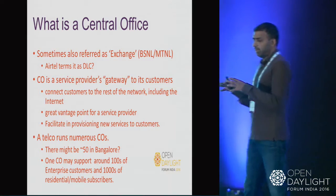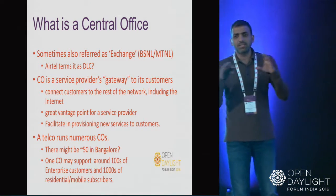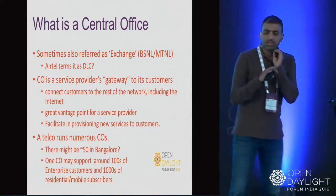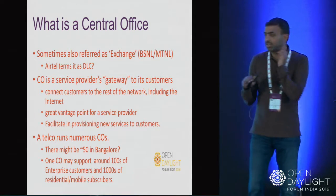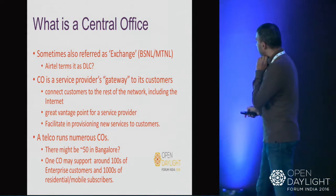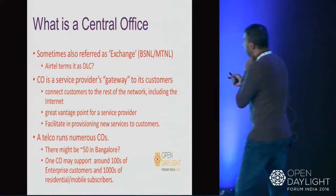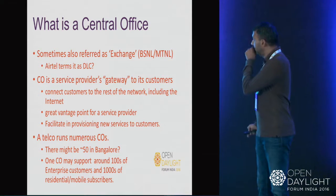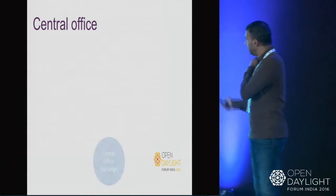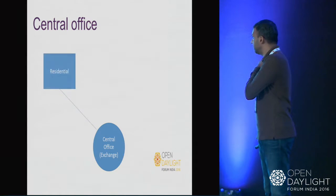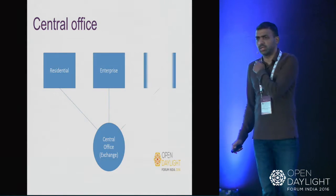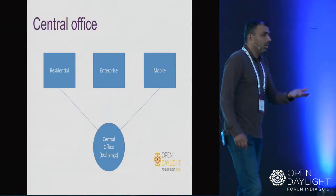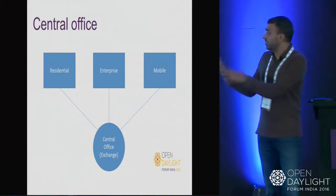Central offices serve residential customers, enterprise customers, and mobile customers. If you follow the CORD project, you'll see the terms R-CORD, M-CORD, and E-CORD, which revolve around these three categories. They also have A-CORD — a horizontal layer for analytics. For example, in residential CORD, GPON is a classic example: we have a central office running OLT, ONTs in the residences connected by a PON network, and beyond the OLT we have aggregation switches and BNG. All these equipments reside in the central offices.